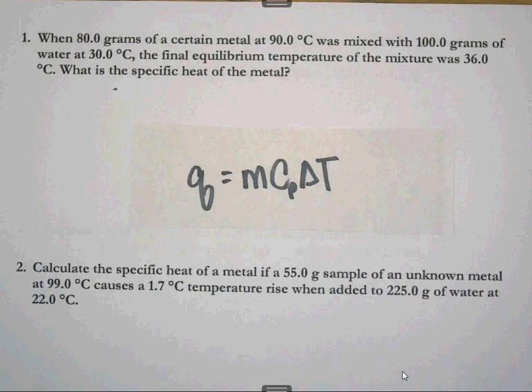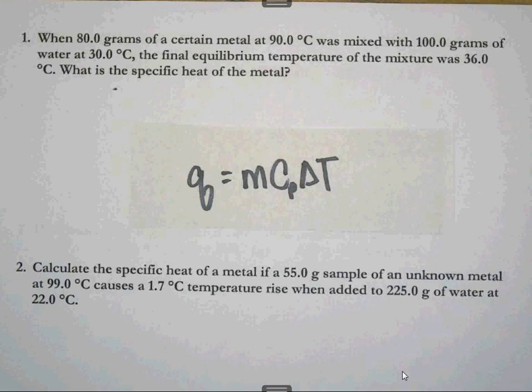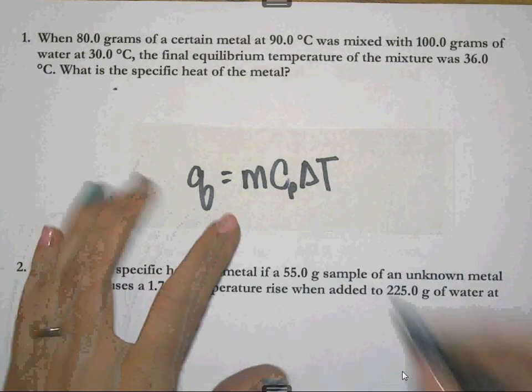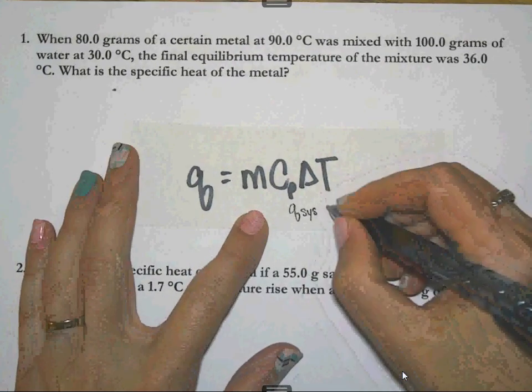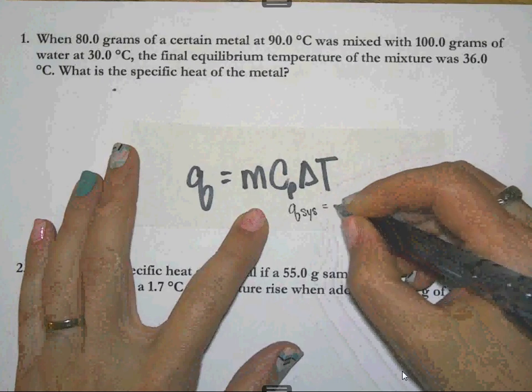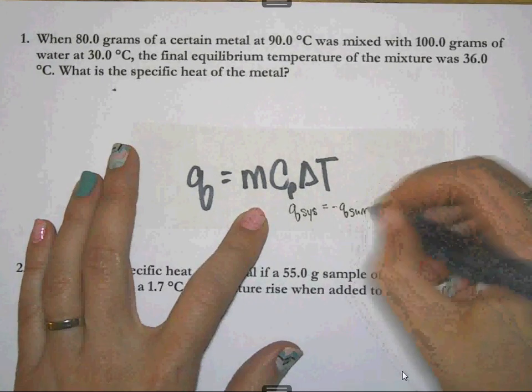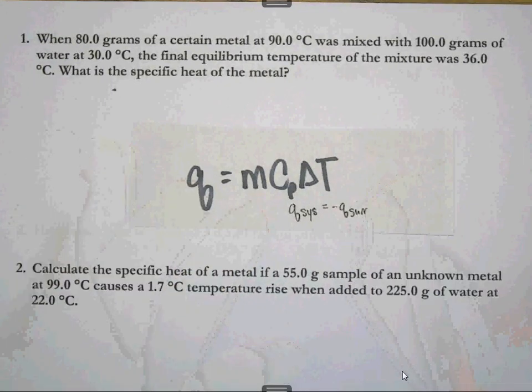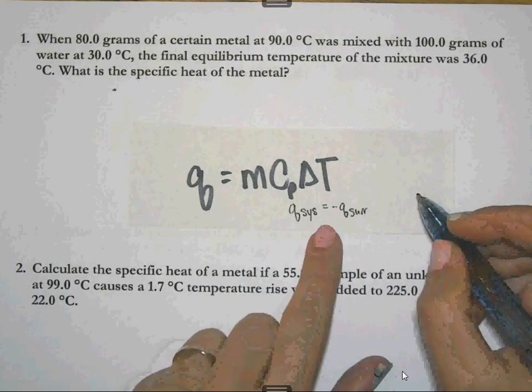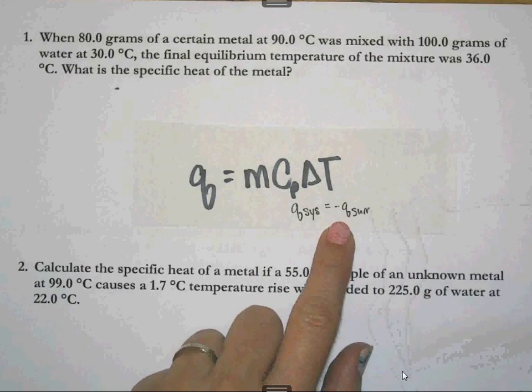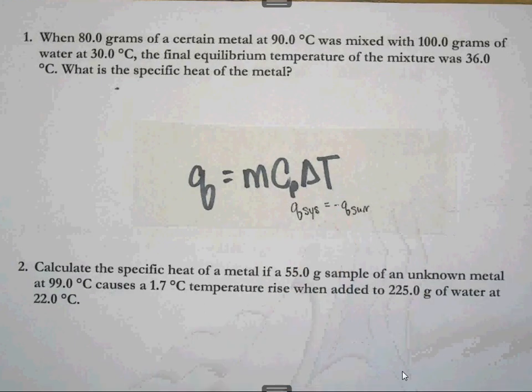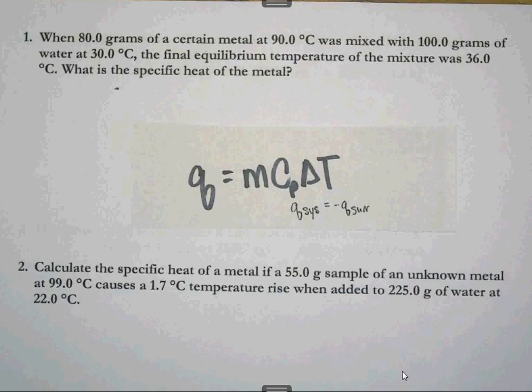This video is going to address the idea that oftentimes the q of a system is going to be equal to the q of the surroundings. So in other words, if one thing loses heat, then the other thing will have to gain. So it can also be written the other way around that the negative q of the system is equal to the positive q of the surroundings. It's just a simple concept that if I have something that loses 20 joules of heat, something else has to gain it.